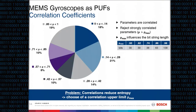Now I come back to the correlation issue. The distribution of all correlation coefficients shows that some parameters are more correlated and others less. The problem is that correlation reduces entropy. This forces us to choose a correlation upper limit and reject parameters that are more strongly correlated than that threshold. This in turn influences the number of parameters we can use and the length of the noisy fingerprint or bit string, as shown in the table.